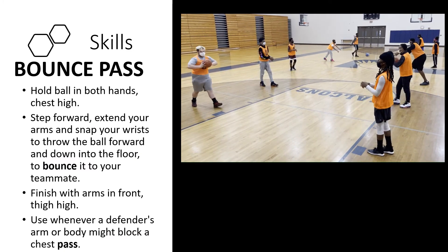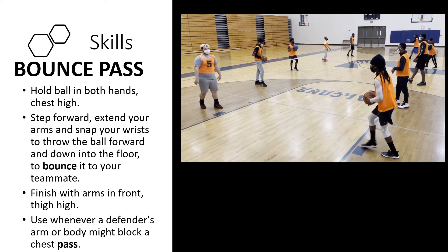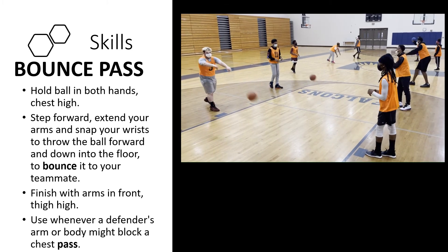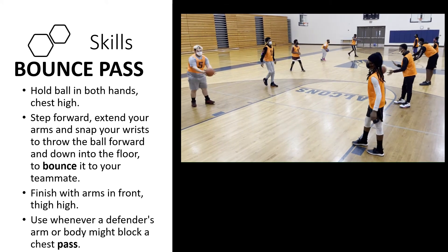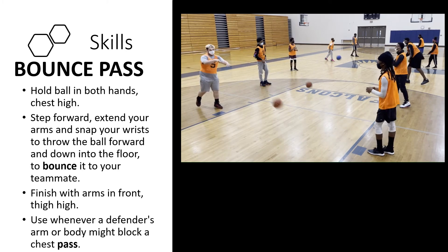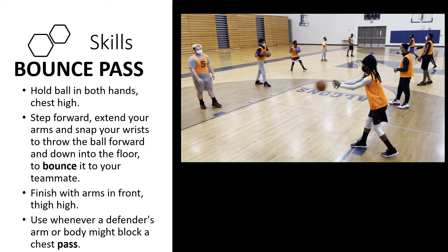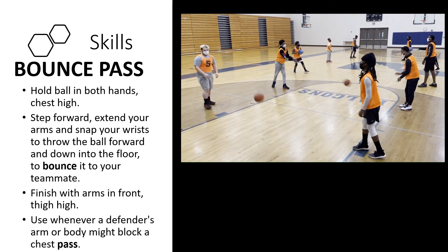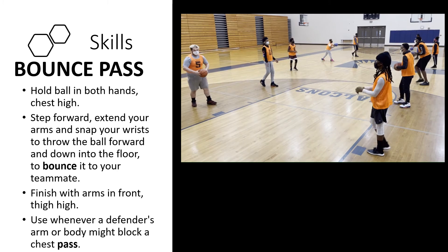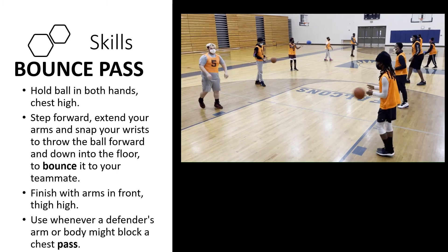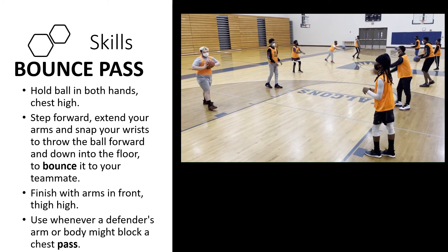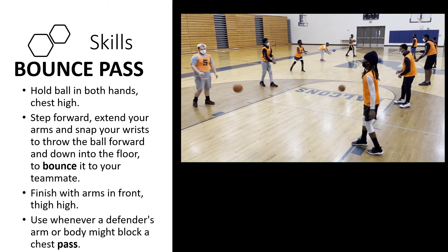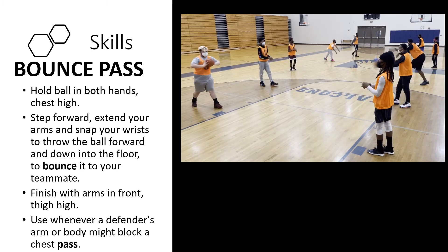The bounce pass: hold the ball with both hands chest high. Step forward. Extend your arms and snap your wrist to throw the ball forward and down into the floor to bounce it to your teammate. Finish with your arms in front, thigh high. Use it whenever the defender's arm or body might block a chest pass.